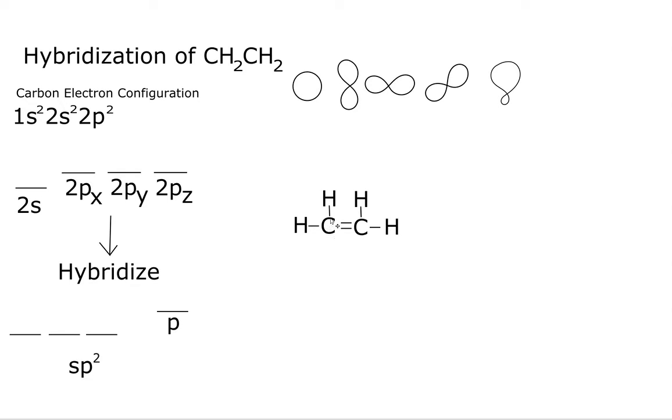Let's look at this carbon first. This carbon has one carbon surrounding it, another hydrogen, and another hydrogen. So we have 1, 2, 3, and that indicates SP2 hybridization. We look at this carbon, it has 1, 2, 3, and that also indicates SP2 hybridization.